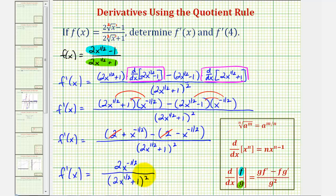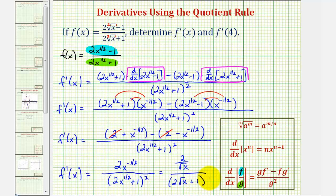Let's rewrite this using radicals. x to the negative one half is the same as one over x to the one half, which is one over the square root of x. So the derivative function is two divided by the square root of x, all divided by two times the square root of x plus one, squared.